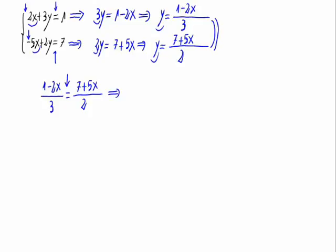Now, 2 times 1 minus 2x is equal to 3 times 7 plus 5x. Applying the distributive property.